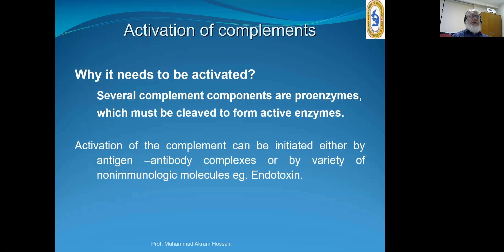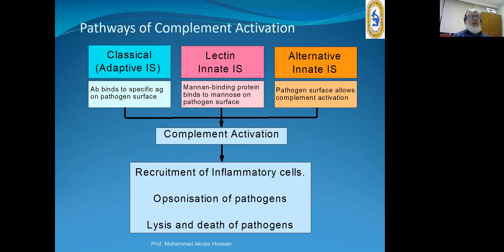How complements are activated: several components of the complement system are pro-enzymes which must be cleaved to form active enzymes, so they need to be activated. Activation can be initiated either by antigen-antibody complexes or by non-immunological molecules like endotoxin or cell walls of some bacteria. There are three pathways: classical, lectin, and alternative. The classical pathway belongs to acquired immunity; lectin and alternative pathways belong to innate immunity. The ultimate result is recruitment of inflammatory cells, opsonization of pathogens, and lysis and death of the pathogen.